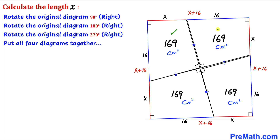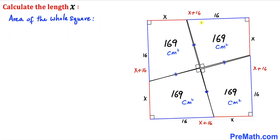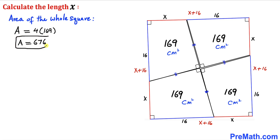Furthermore, we know that the area of each piece is 169 centimeter square. Therefore the area of this whole square is going to be 4 times 169, so the area of this whole square is 676 square centimeters. Now let's recall the area of a square formula: area equals s squared, where s represents the side length.